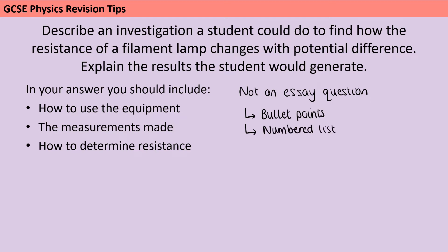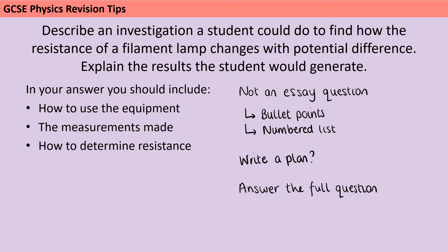You do need to lay out your answer in a logical order, and particularly for a method that means giving instructions in an order that will allow you to actually get the data needed to answer the question. You may want to consider drafting a short plan — not taking up half a page, but just writing down some quick ideas or annotating the question to make sure you've covered all of the aspects. It's also really important that you answer the full question, particularly for one like this where the rubric tells you there are three things you need to include.